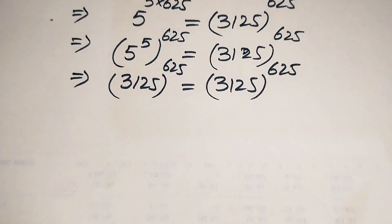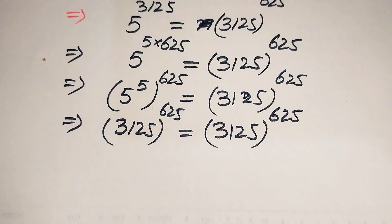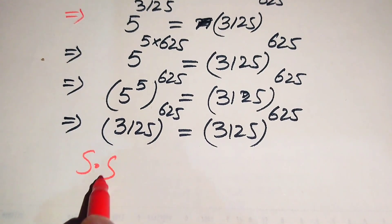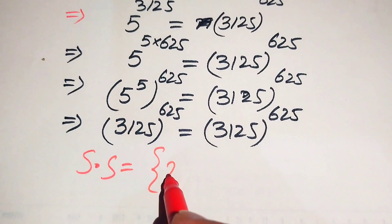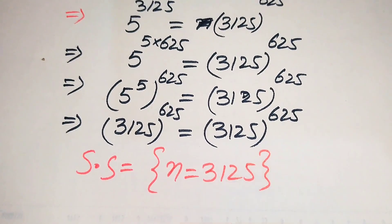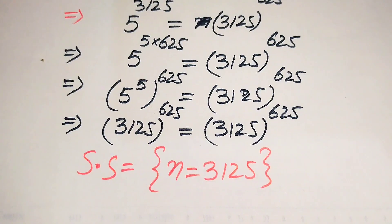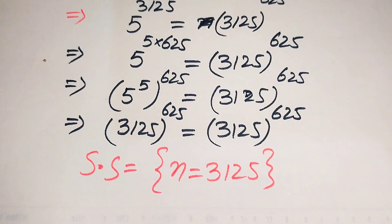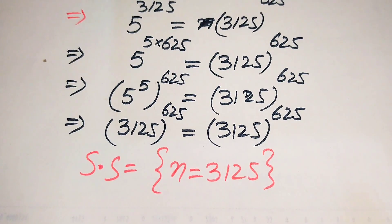This means the value n equals 3125 satisfies our given equation. We finally conclude that the solution set of this question is n equals 3125, and this is our final answer. Thank you so much for watching this video — please subscribe to my channel for more exciting videos.